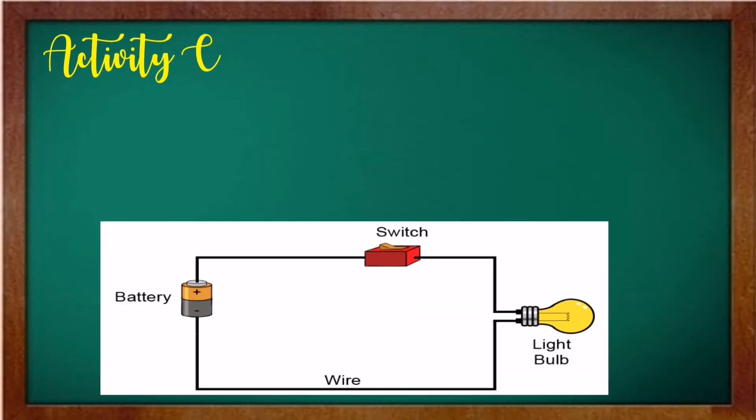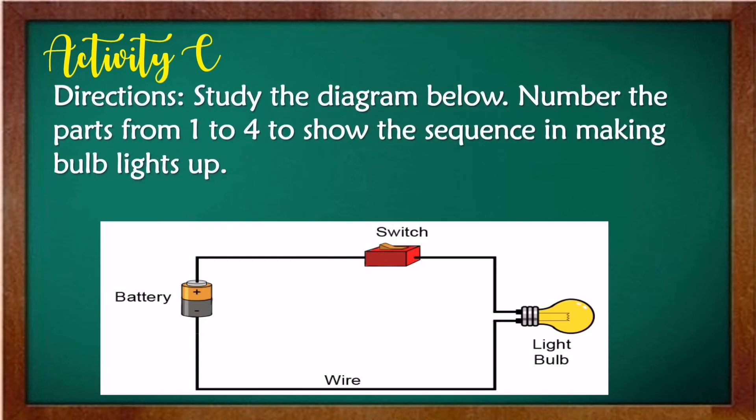We have another activity. Activity C. Directions. Study the diagram below. Number the parts from one to four to show the sequence in making the bulb lights up. So, in doing your activities, you must follow the steps from one to four. So, put a number from one to four to show the sequence in making the bulb lights up.